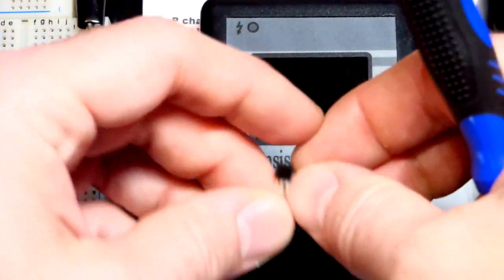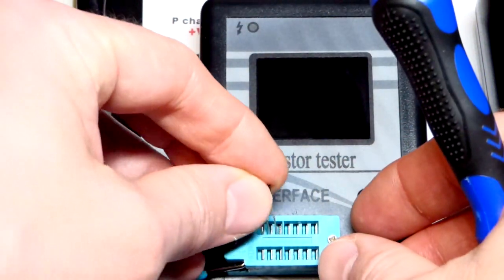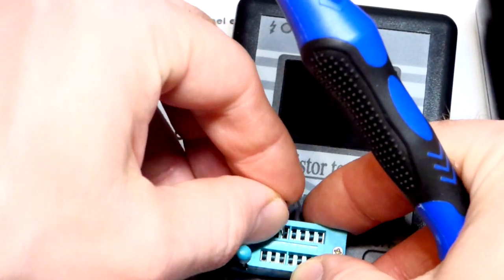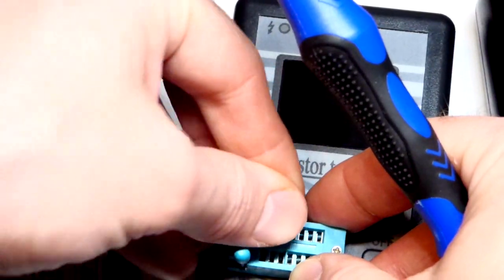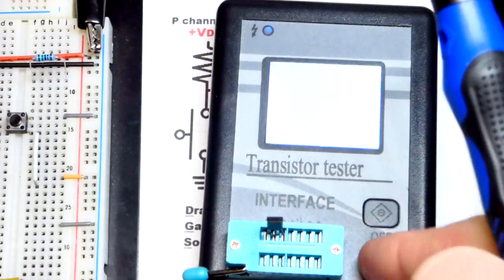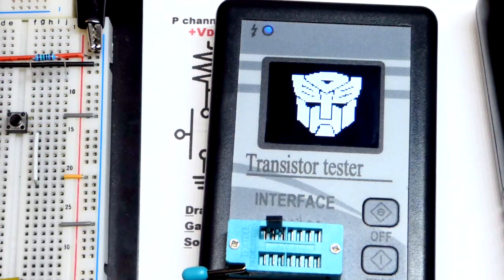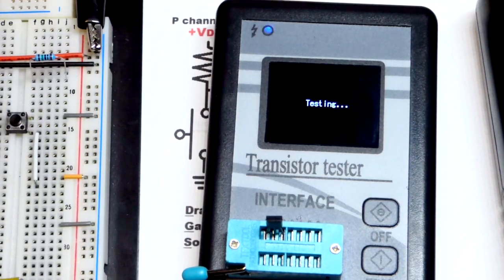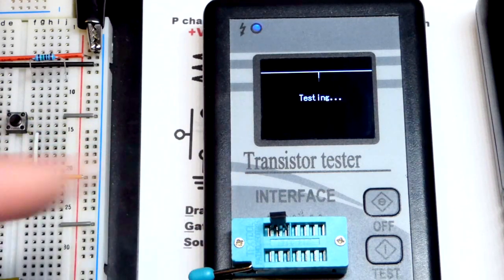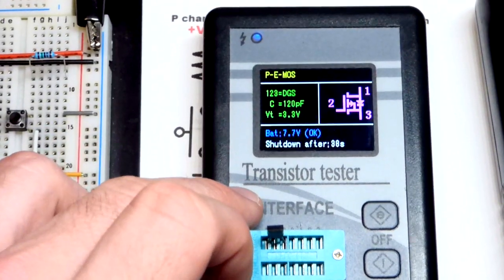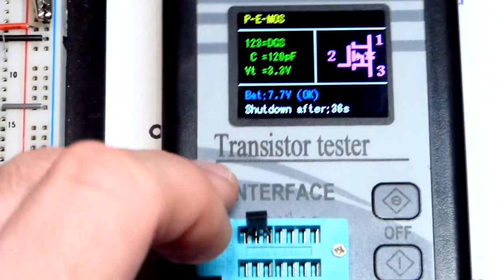If you're unsure for any reason of the pin layout, you can just put it in a component tester like this, hit test, and it will automatically test it. Especially if you're just starting out, I really recommend a tester like this. It also does resistors and stuff.